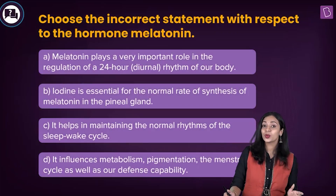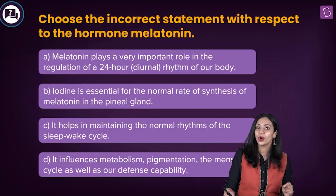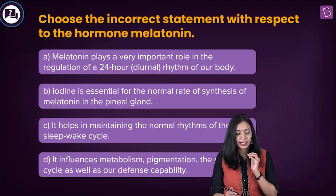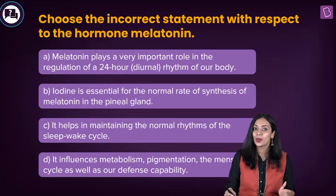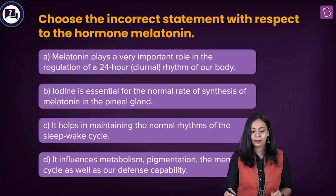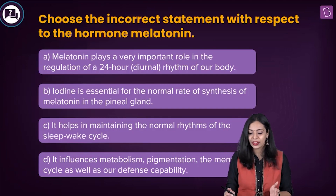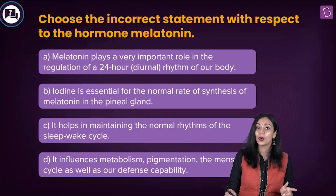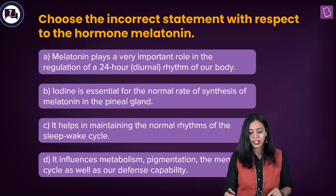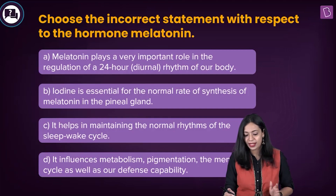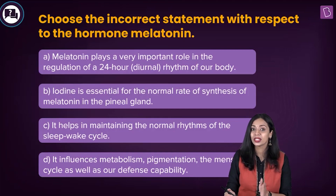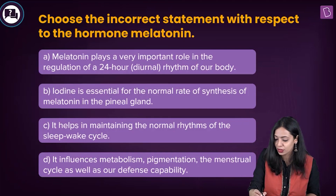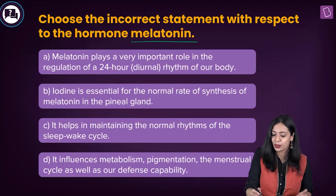Here's the next question: choose the incorrect statement with respect to the hormone melatonin. Option A: melatonin plays a very important role in the regulation of a 24-hour or diurnal rhythm of our body. Option B: iodine is essential for the normal rate of synthesis of melatonin in the pineal gland. Option C: it helps in maintaining the normal rhythms of the sleep-wake cycle. Option D: it influences metabolism, pigmentation, the menstrual cycle, and our defense capability.